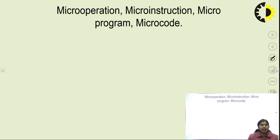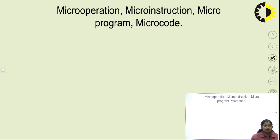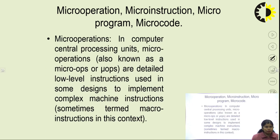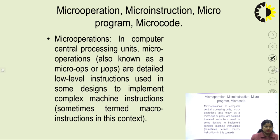There are some particular fields to understand in the concept of control memory. The control memory contains micro operations and micro instructions in the form of control words. The key terms are: micro operations, instructions, micro program, and micro code. A micro operation is defined as whatever operation is performed in a register — low-level instructions executed in the register are called micro operations.